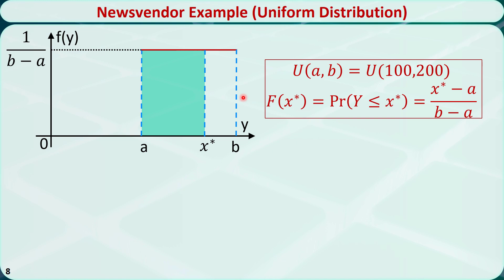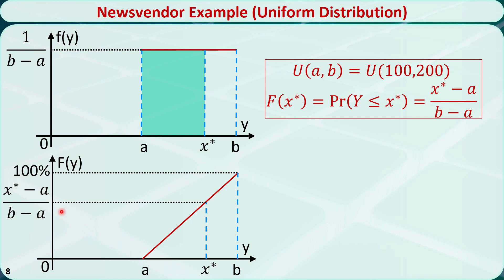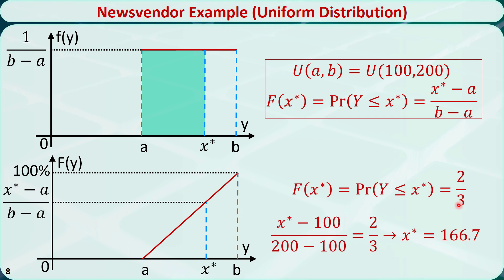The demand Y follows a uniform distribution. This figure shows the probability density function of a general uniform distribution with parameters A and B. The overstocking probability — the probability of demand Y being less than or equal to the optimal stock X* — is equal to the area of the shaded region, which equals (X* minus A) divided by (B minus A). We can also show this using the cumulative distribution function. Since the overstocking probability equals 2/3, we solve the equation to find the optimal quantity X* equals 166.7 copies of newspaper.